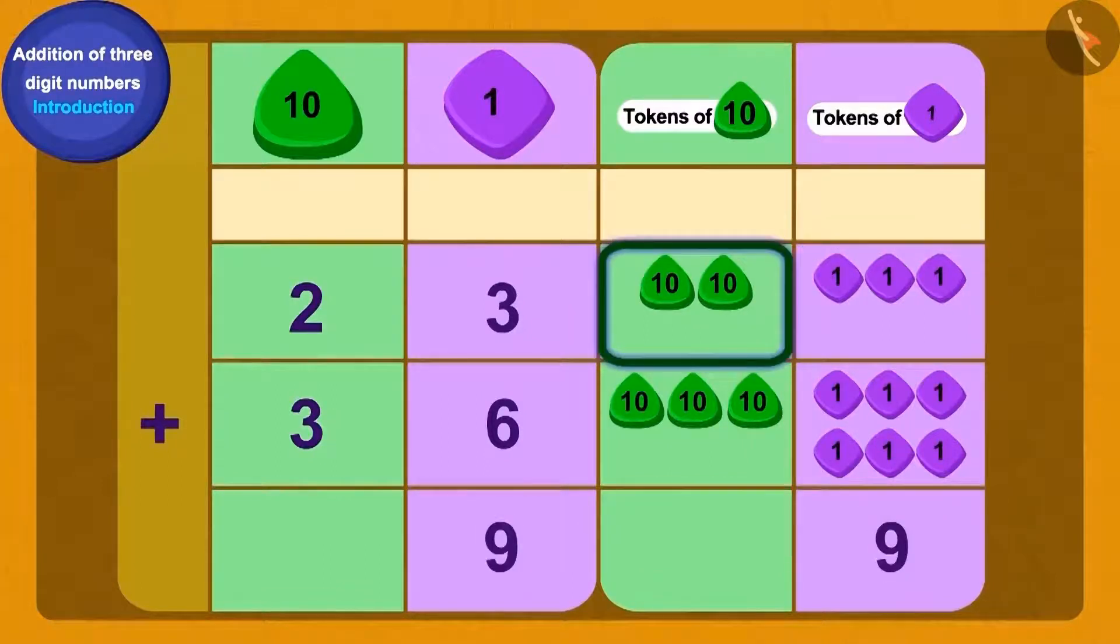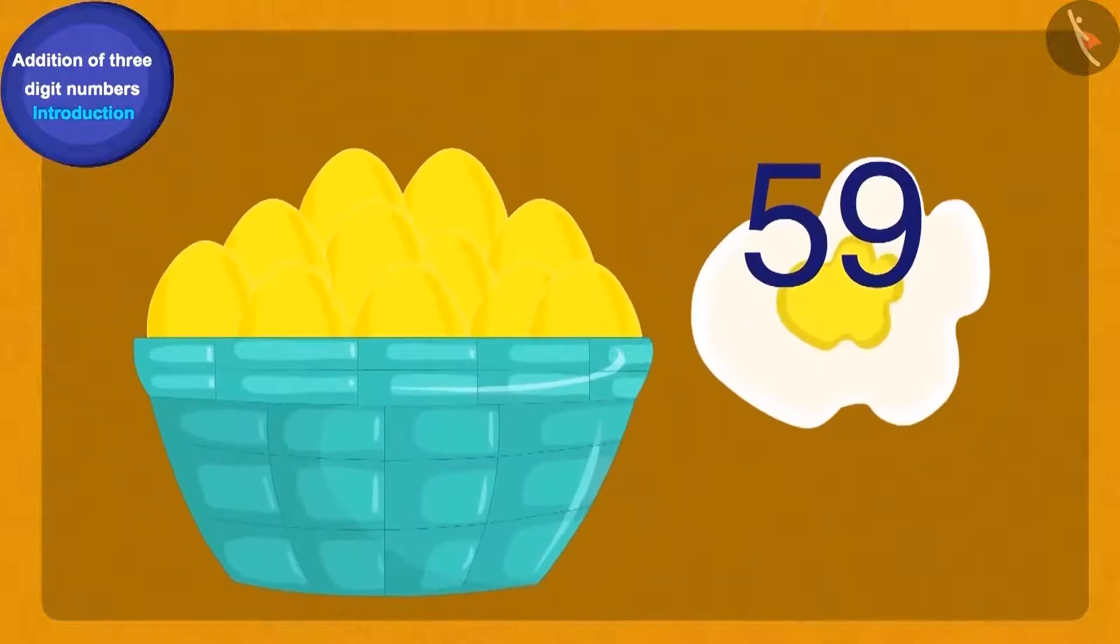Now if we add 2 ten tokens and 3 ten tokens, how many do we get? Perfect! 5 of 10 tokens. Thus, Baban had a total of 59 gold eggs.